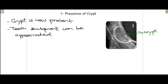At stage 1 the crypt is now radiographically appreciated. You can see this oval-type shape — the crypt is now present, which means that tooth development has now started.